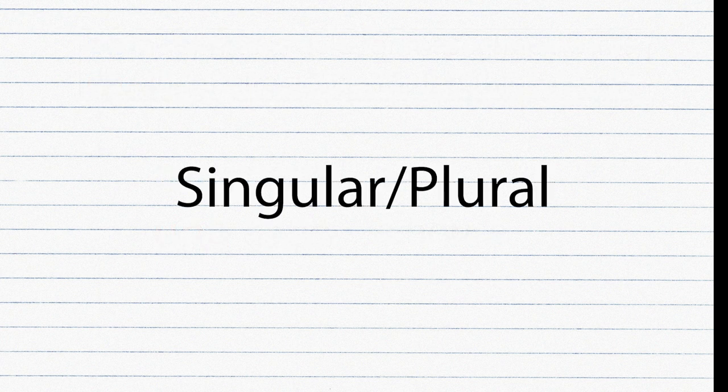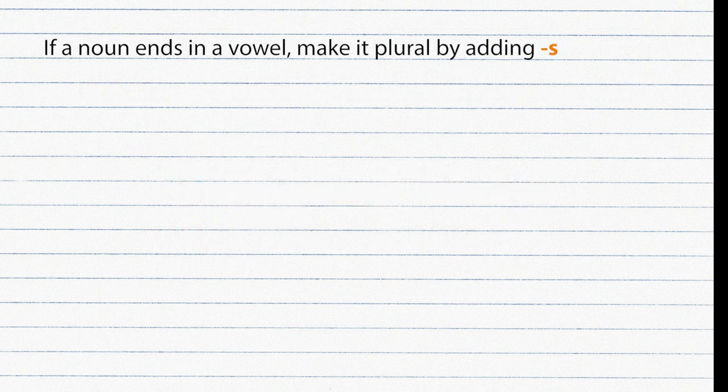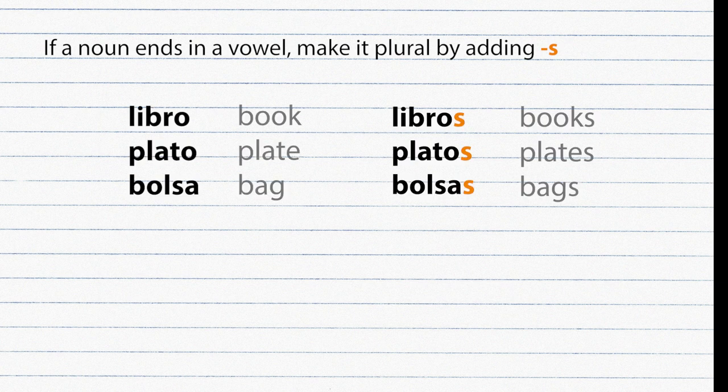Singular and plural. If a noun ends with a vowel, make it plural by adding S. Examples: Libro → Libros, Plato → Platos, Bolsa → Bolsas.